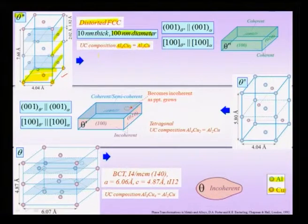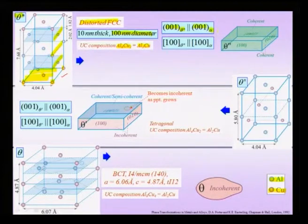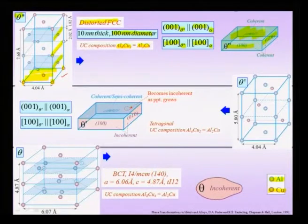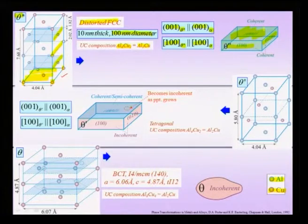The theta double prime precipitate has an orientation relationship with the matrix: the [001] direction of theta double prime is parallel to the [001] direction of the aluminium-copper solid solution alpha, and the [100] direction of theta double prime is parallel to the [100] direction of aluminium. All faces of this precipitate — the (100), (010), and (001) faces — are coherent with the matrix, thus reducing the interfacial energy.